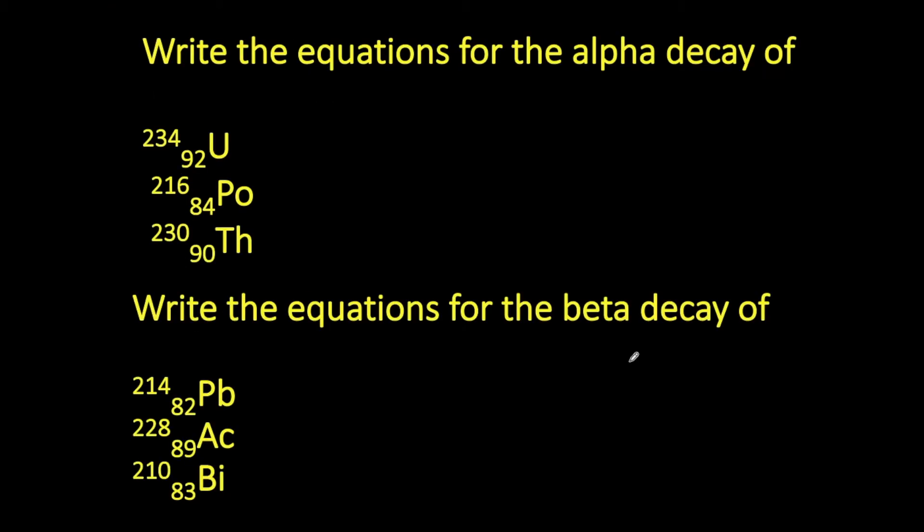So what we're going to do now is we are going to have a quick try of writing equations for alpha and beta decay ourselves. So what I want you to do is I would like you now to pause the video here, fresh page in your jotter, fresh piece of paper, and attempt to write out the equations for each of these examples. When you are done, come back and I'll run through it here for you.